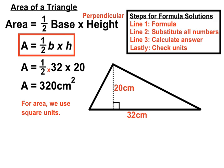So pretty similar to the first example except the perpendicular height was measured inside the triangle. That's okay. As long as it's at 90 degrees to our base we can use it for our perpendicular height.